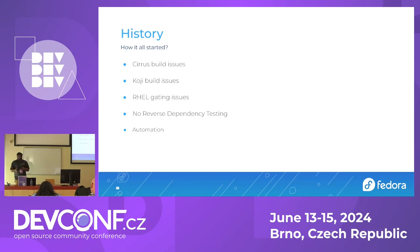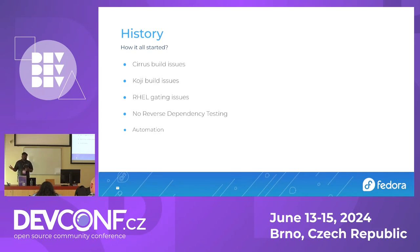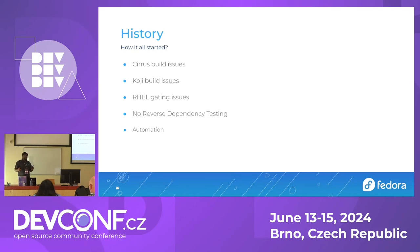There are Koji build issues, more on the lines of architecture availability. When we make a release and try to build it in Koji, we don't know if it's going to fail on multi-arch platforms. Cirrus at the time only supported x86-64. And then RHEL-gating issues — we would like to know how our changes impact RHEL. As many of you know, it will take three to six months or more to see your software in RHEL, and it can be too late by then.